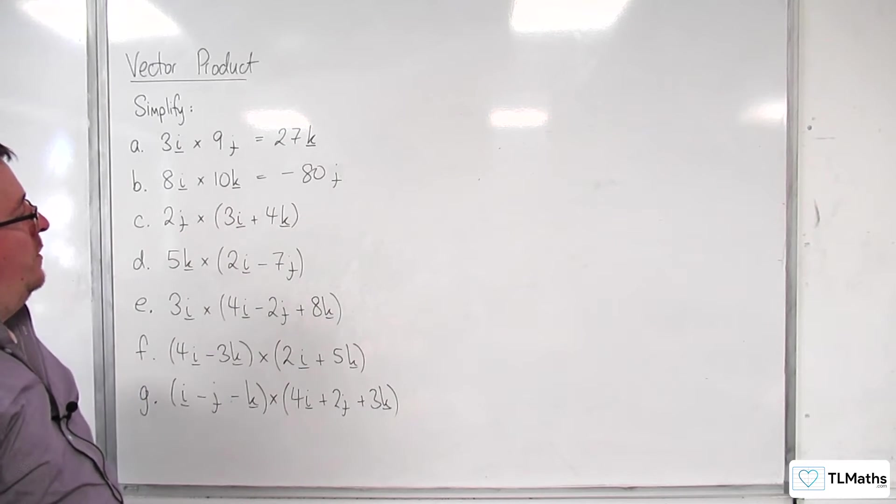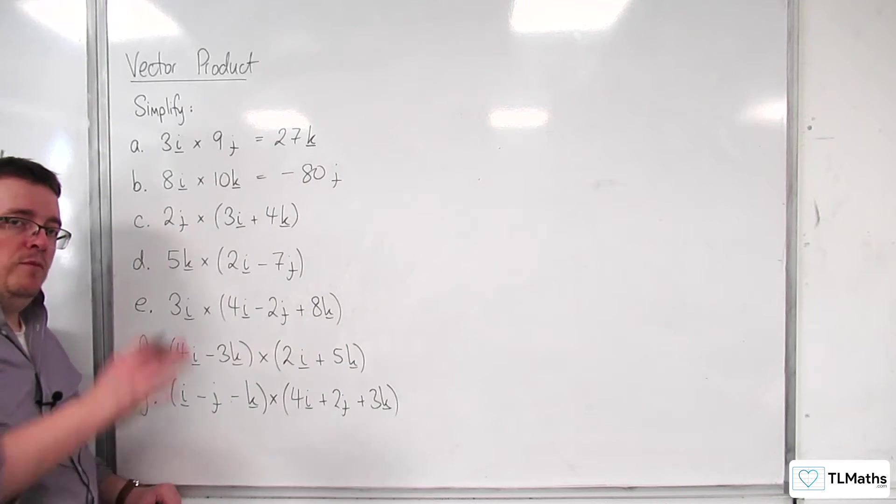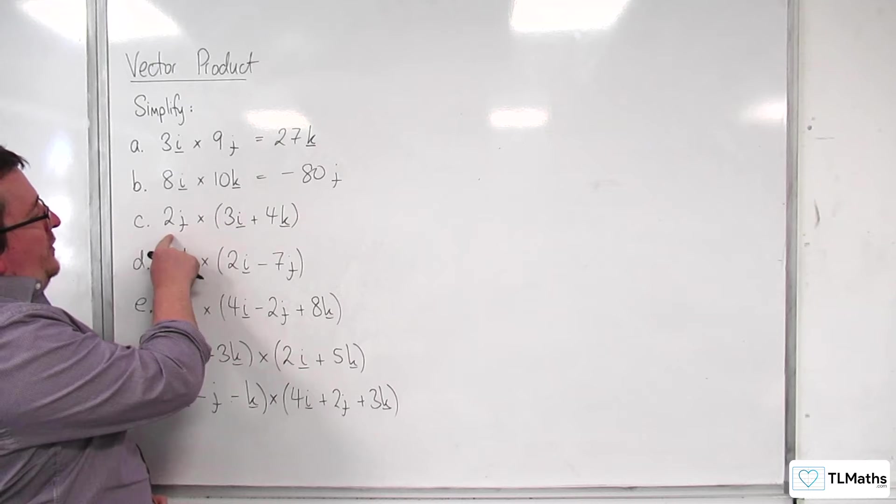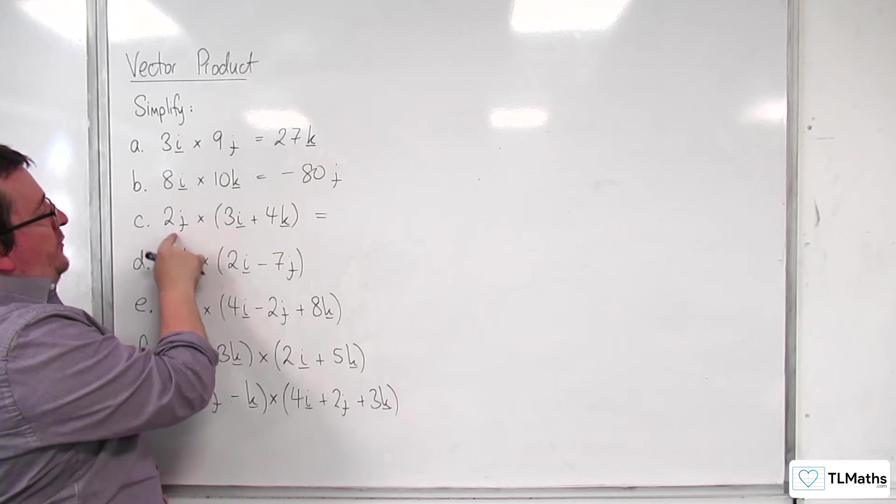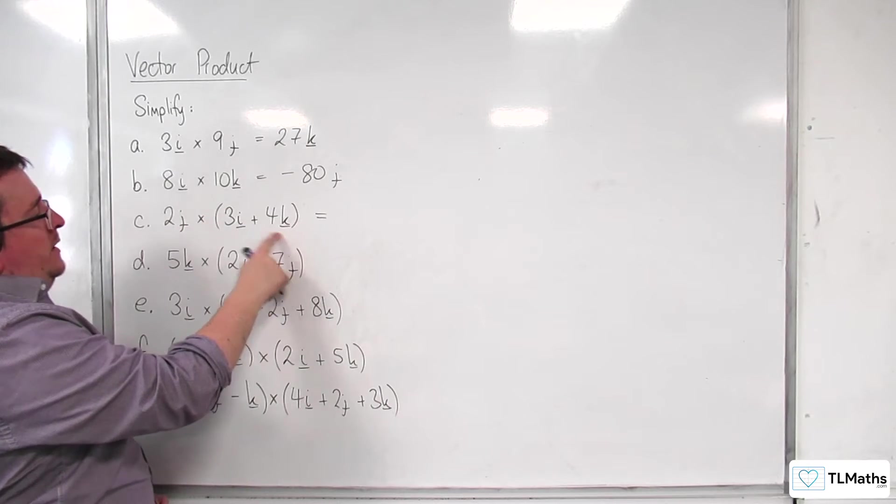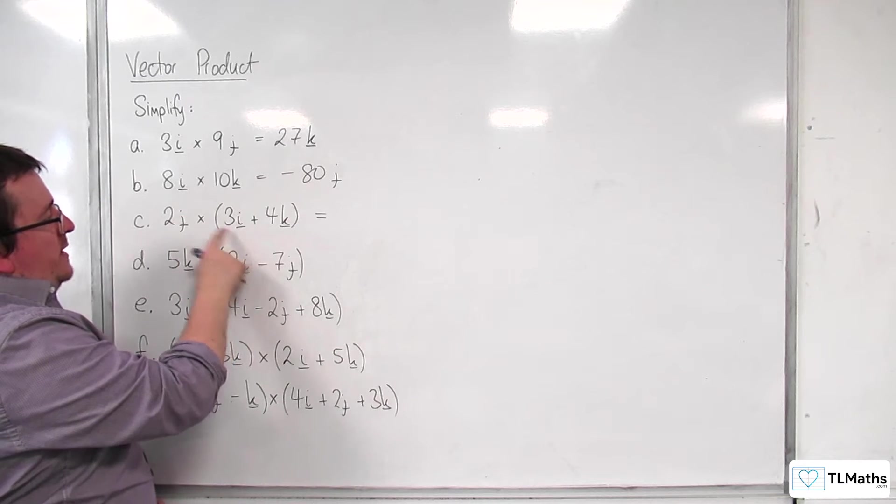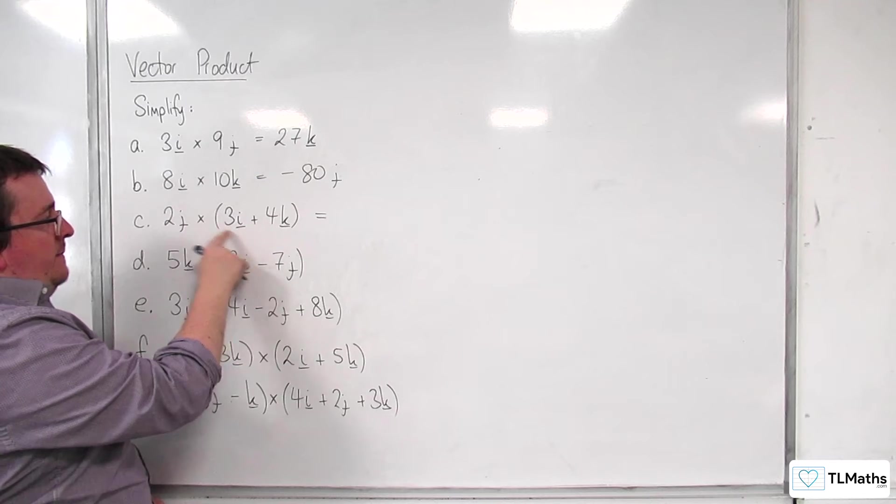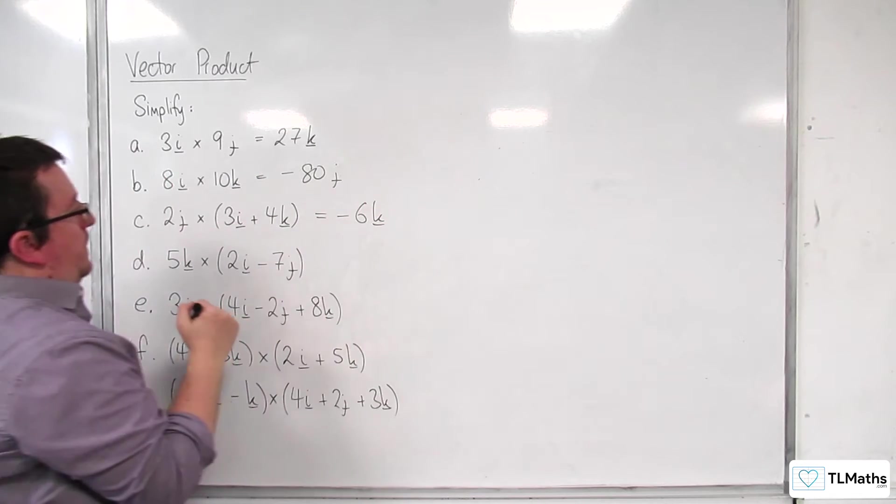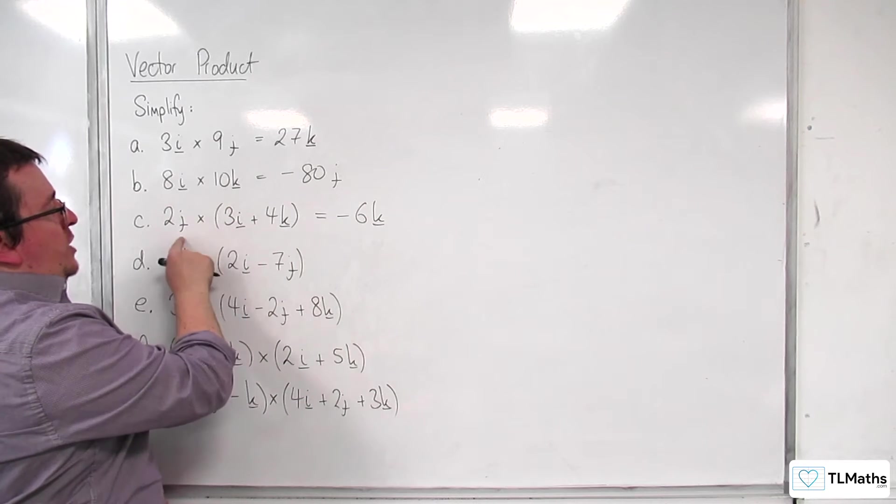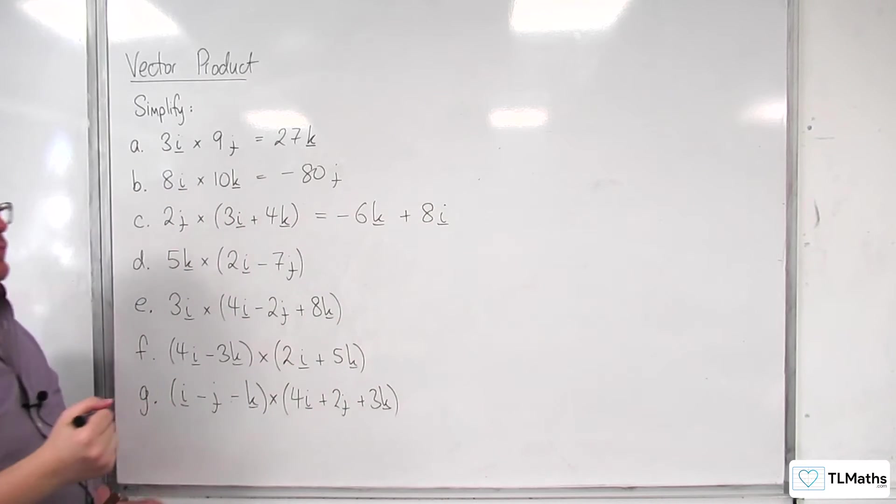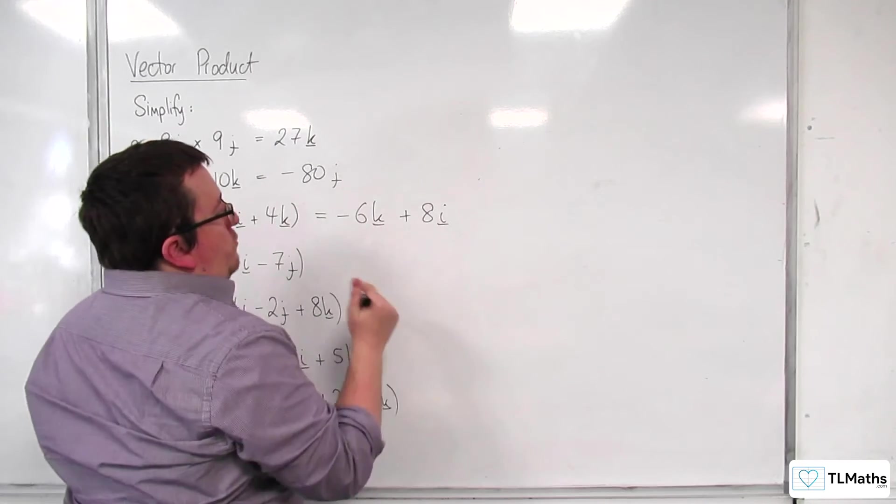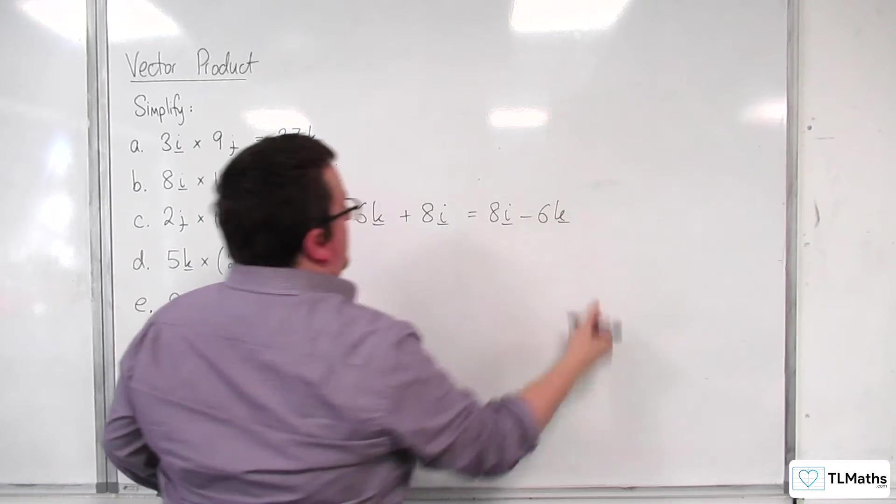Now, the next one, because we've got that the vector product is distributive over vector addition, that means this is the same as looking at 2j cross 3i plus 2j cross 4k. So, first of all, 2j cross 3i. Well, j cross i is minus k. So, we're going to have minus 6k. And then we've got 2j cross 4k. j cross k is i. And so, we've got plus 8i. So, we can do that directly. So, you know, we probably want to rewrite that as 8i take away 6k, don't we?